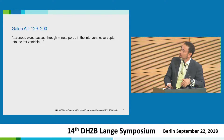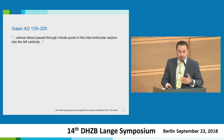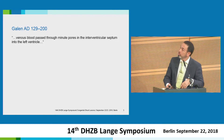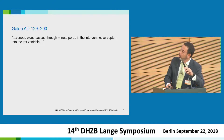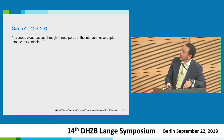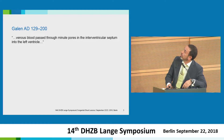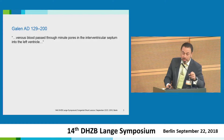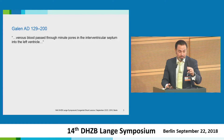At first I found this sentence of Galen, who said — as you know, 2,000 years ago — that venous blood passed through the minute pores in the interventricular septum into the left ventricle.